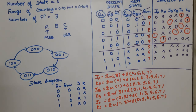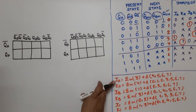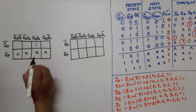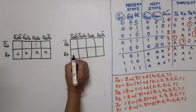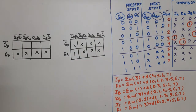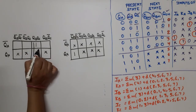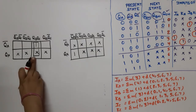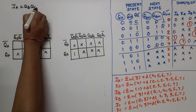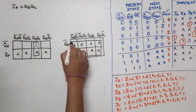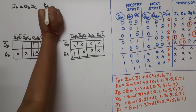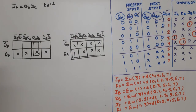First, the K-map for JA: the minterm is at position 3 and don't cares are at 4, 5, 6, 7. We form one pair using position 3 and a don't care. The common variable is QB·QC, so JA = QB·QC. For KA, the minterm is at position 4 and with all the don't cares included, they form an octet. Therefore, KA = 1.